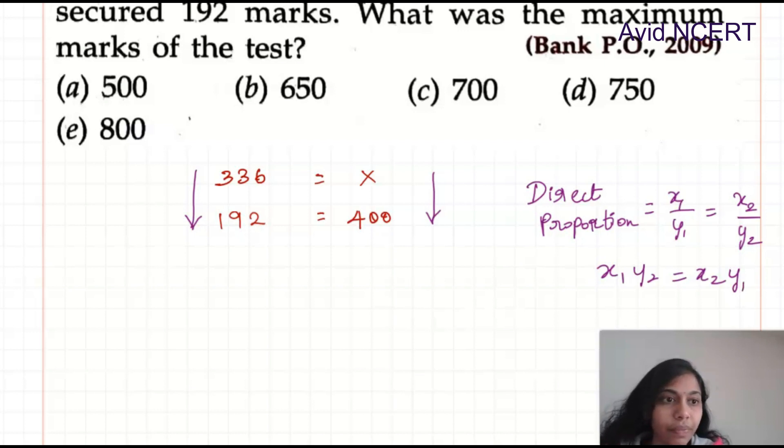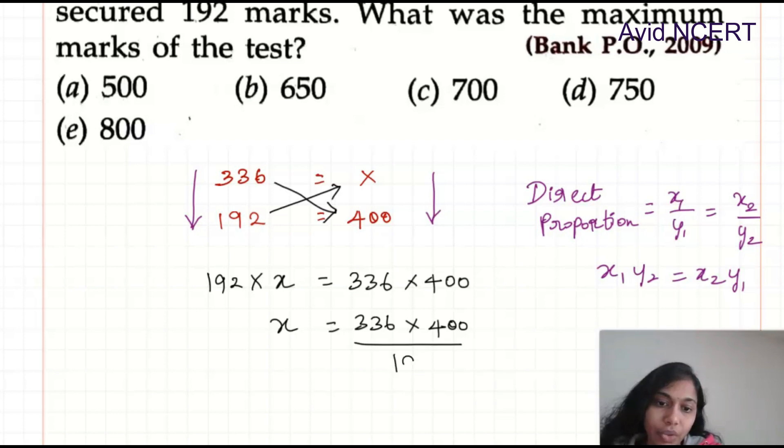Therefore, here it is 192 times x equals 336 times 400. By solving this, we can find the value of x.